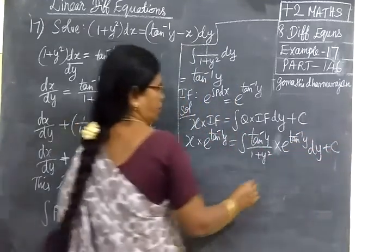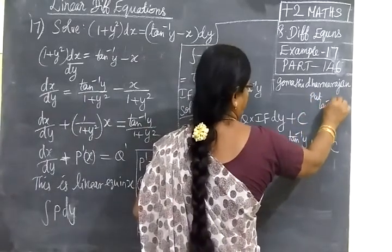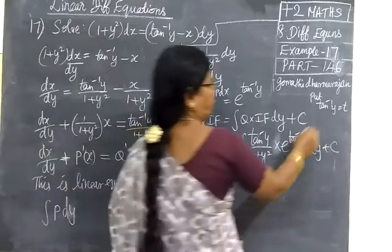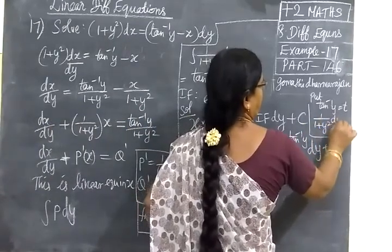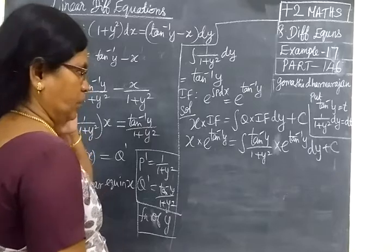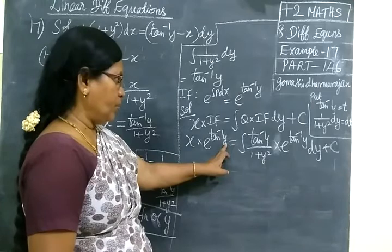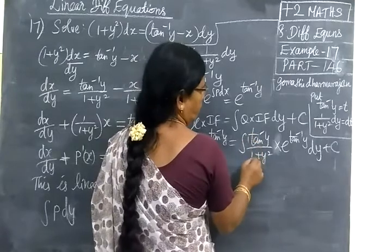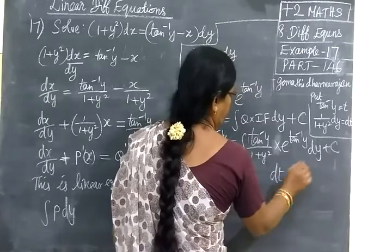Now, put tan inverse y equal to some t. So if you differentiate tan inverse y, we get 1 divided by (1 plus y squared) dy equals dt. So in the integral, e to the power tan inverse y becomes e to the power t, and tan inverse y divided by (1 plus y squared) dy becomes t times e to the power t dt.